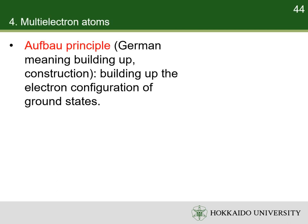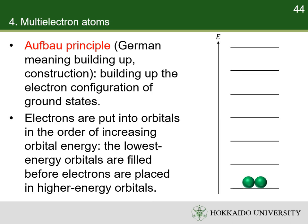The Aufbau principle — from the German, meaning 'building up' or 'construction' — formulated by Bohr and Pauli in the early 1920s, is a rule for building up the electronic configuration of atoms and molecules in their ground states. It states that a maximum of two electrons are put into orbitals in the order of increasing orbital energy. The lowest energy orbitals are filled before electrons are placed in higher energy orbitals. The principle works very well for the ground states of the atoms of the known 118 elements. However, to use the principle, it is necessary to first figure out the order of the energies of the orbitals.